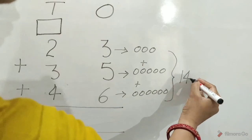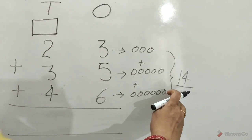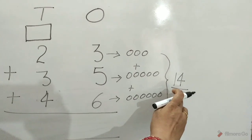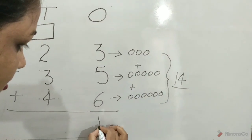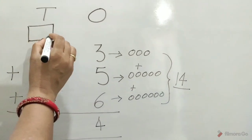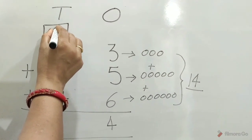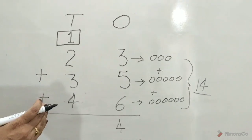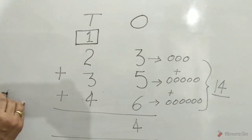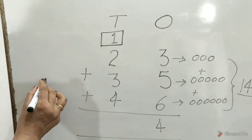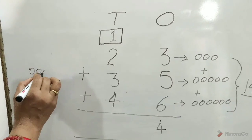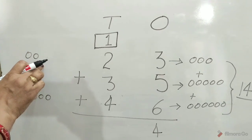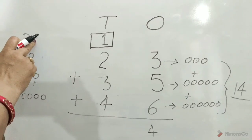Write here 14. Children, we can regroup 14 ones. 14 ones is equal to 1 ten and 4 ones. So write 4 ones under the ones, and 1 ten goes to carryover at tens place. Now at tens, we can draw 4 circles in front of 4 tens, and 1 ten carries over. Plus 3 circles in front of 3 tens, plus 2 circles in front of 2 tens, plus 1 circle in front of 1 ten.